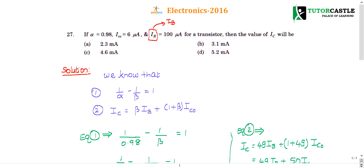Question number 27: if alpha is equal to 0.98 and IC naught (reverse saturation current) is 6 micro amperes, and the question says IR = 100 micro amperes — but the question is incorrect; it should be IB (base current). If the base current is 100 micro amperes for a transistor, then what is the value of IC?